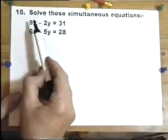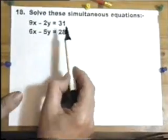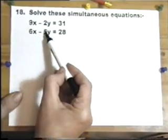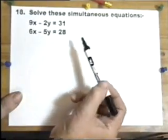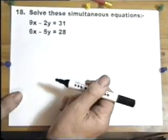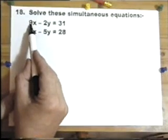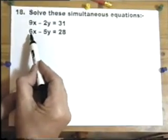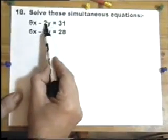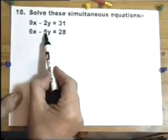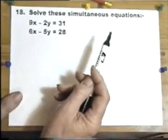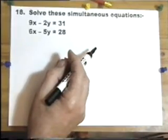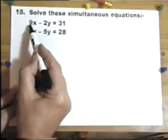Now to do that you need to manipulate these two equations so either both of these numbers are the same number, or both of these numbers are the same number. Sometimes there's an advantage in which you choose. Either I want this to read 18x and this 18x, because 9 goes into 18 and 6 goes into 18. Or I want this to read 10y and this to read 10y. In this particular question there's no advantage in either of those starting points. I'm just going to choose to make these both into 18s.